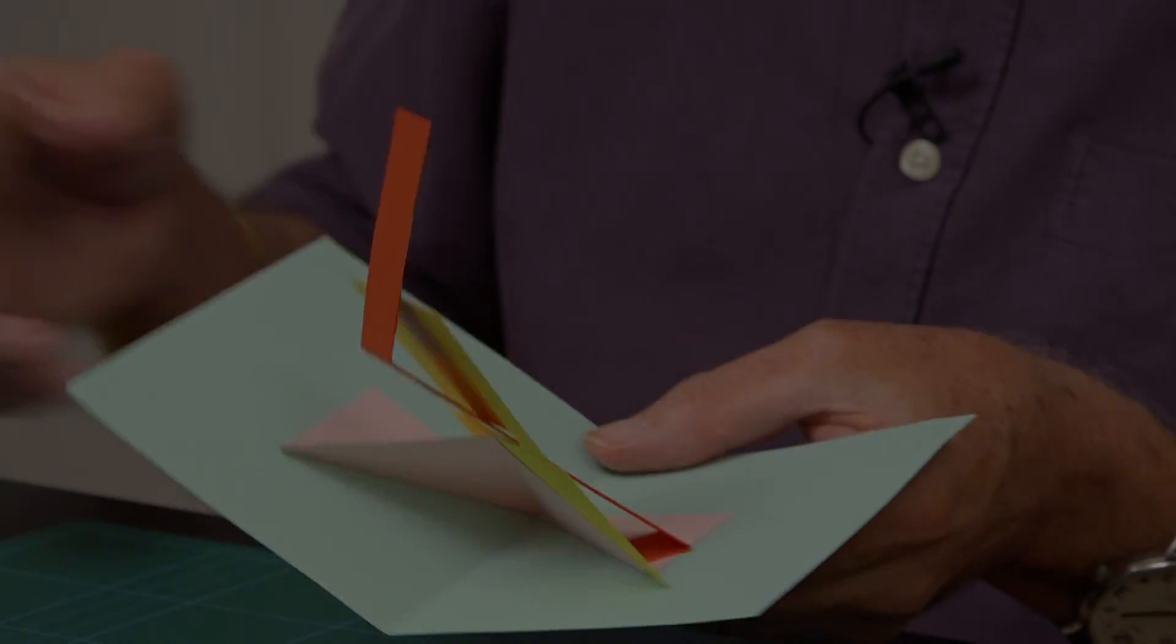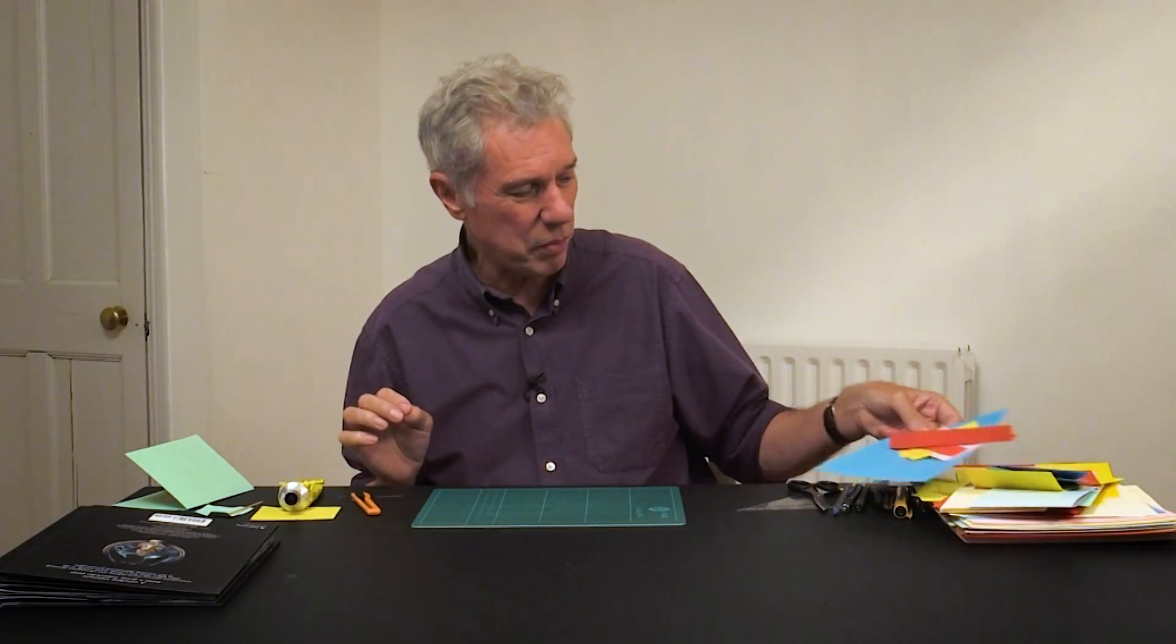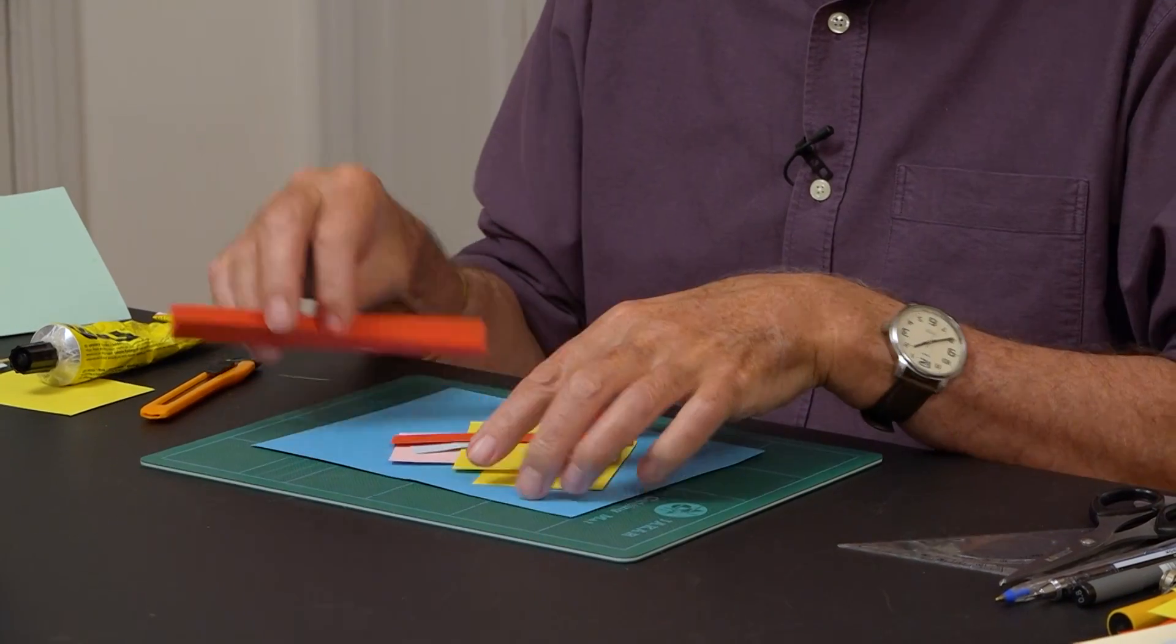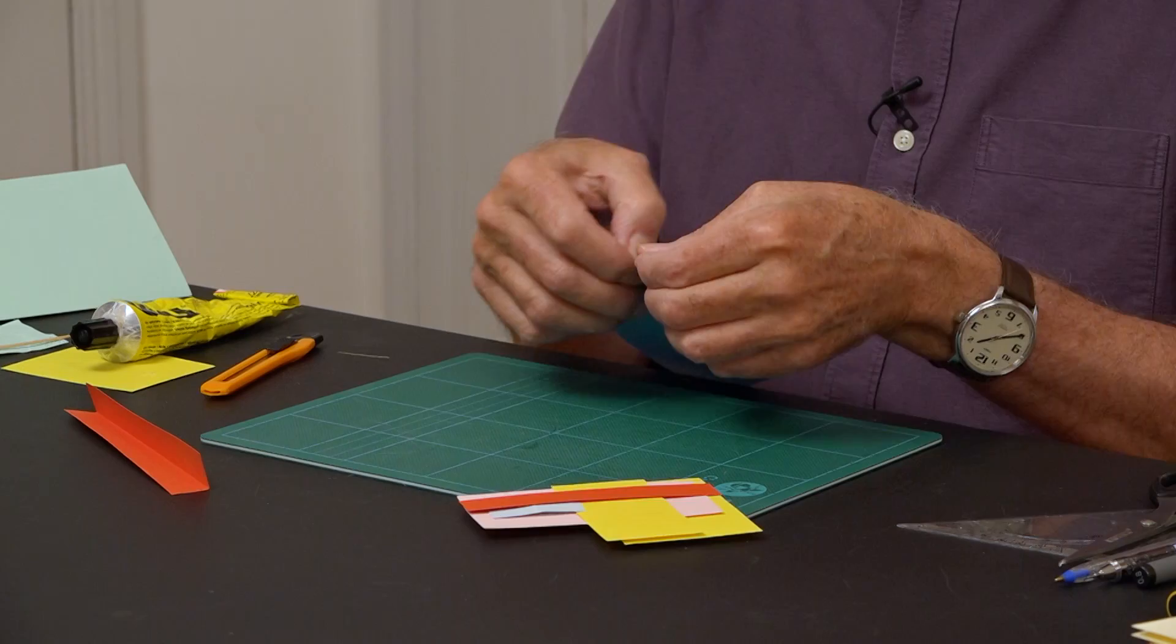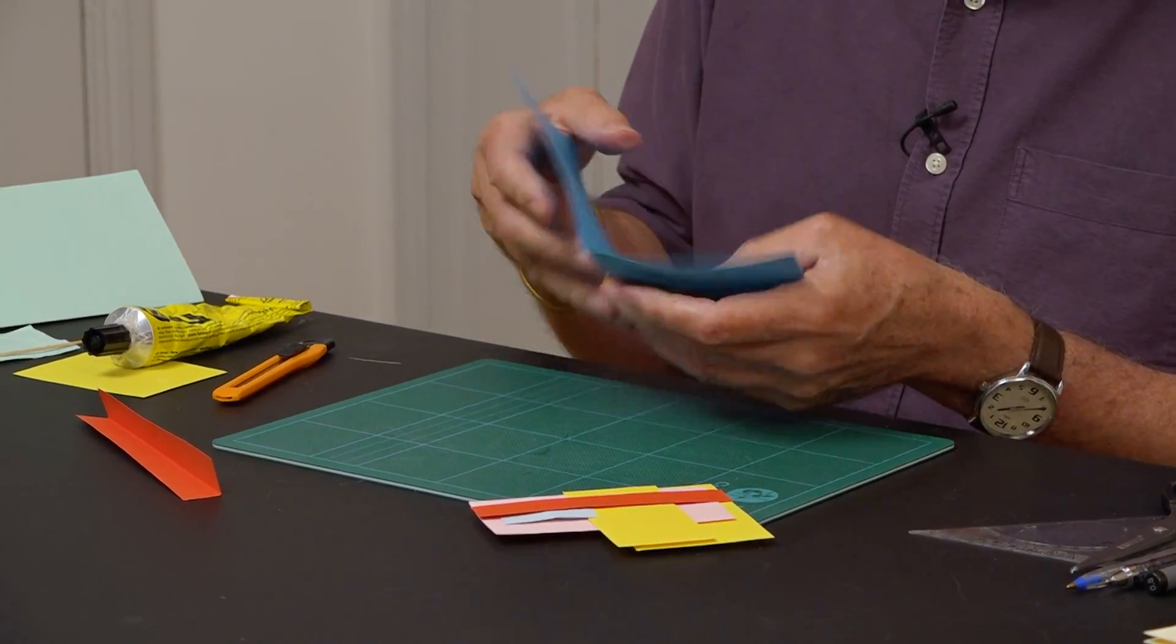So now I'll make one. I've cut out all the pieces in advance. So I'll explain them all. They're all quite simple. This is the base sheet, folded in half, folded really thoroughly.